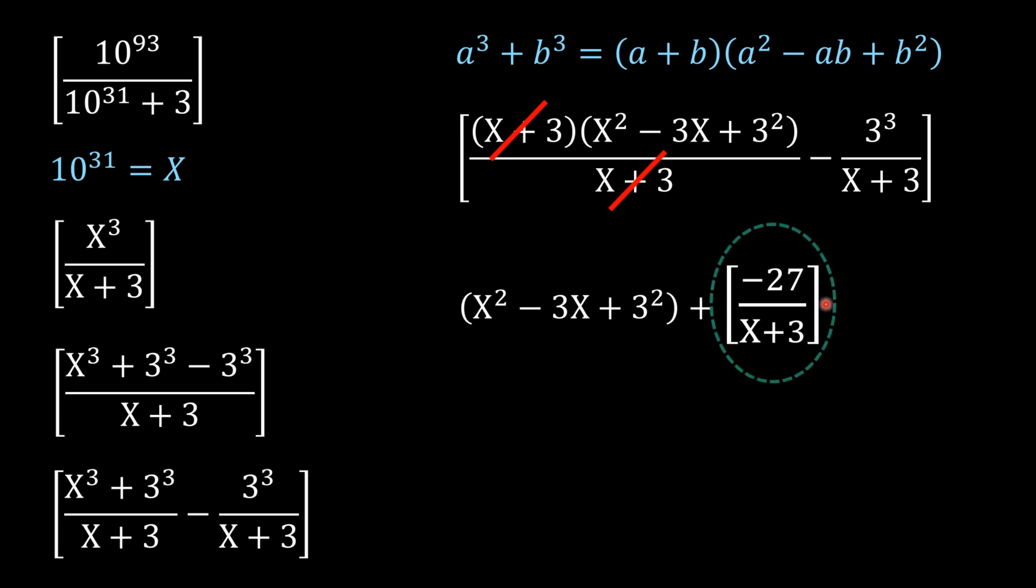Let's focus on this part. X is a very big value—10 raised to the power 31, a big positive value—and this is just 27, a small value.